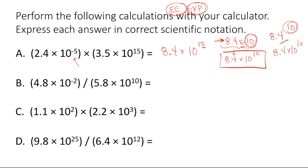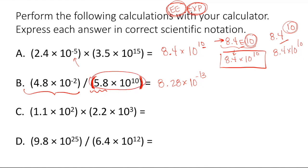For the division example, I get approximately 8.28 times 10 to the negative 13th. It's really important here that you use the exponent keys or put your numbers in parentheses — especially the denominator. If you're not using an exponent key and not using parentheses, your calculator will divide only by 5.8 and then multiply your answer by 10 to the 10th separately, so you'll get something like 8.28 but with a completely wrong exponent. If you're having issues, practice with your calculator until you can reproduce these answers.